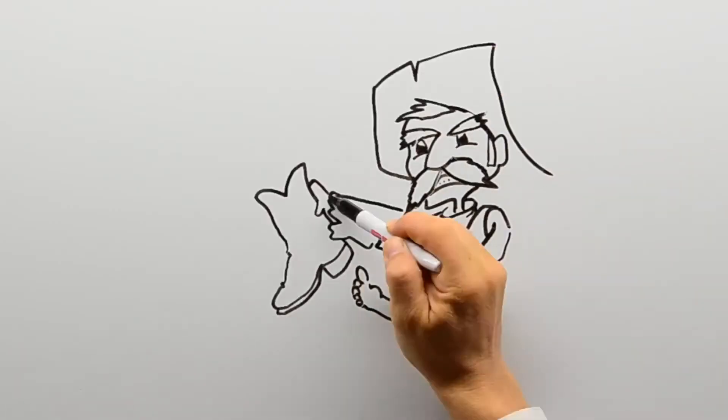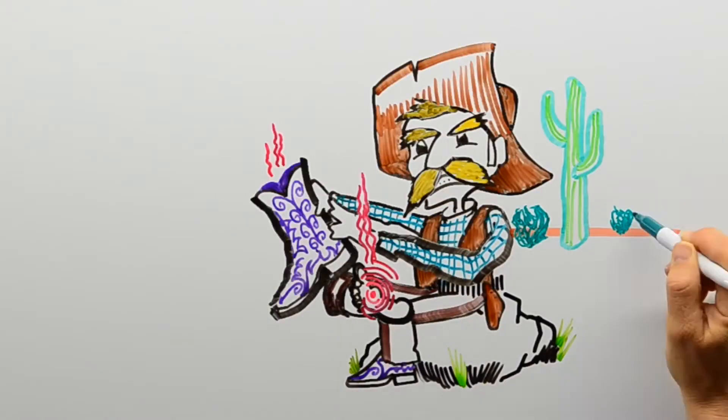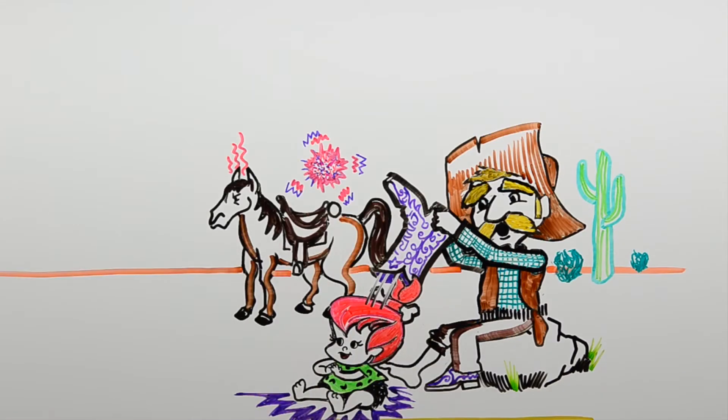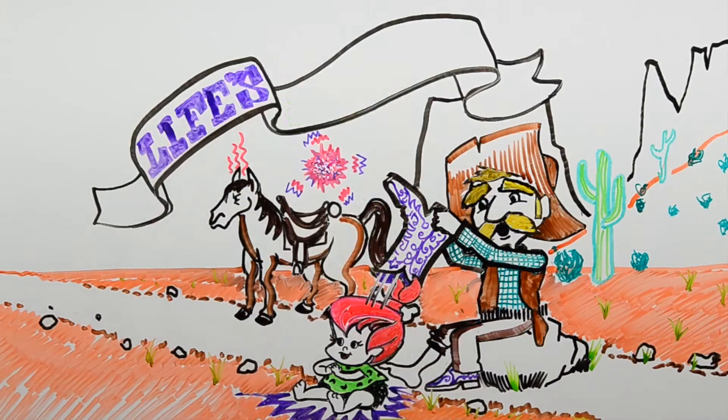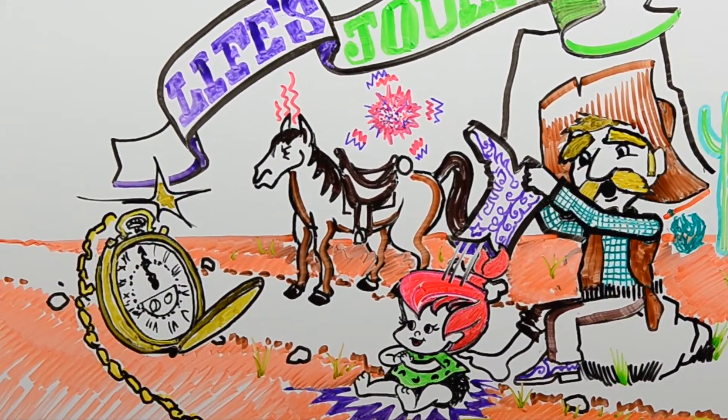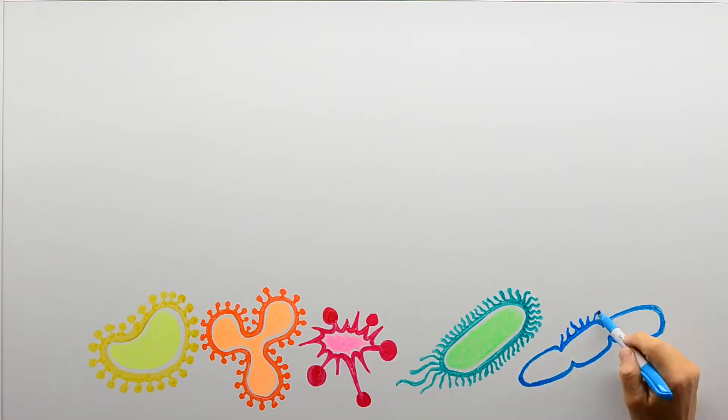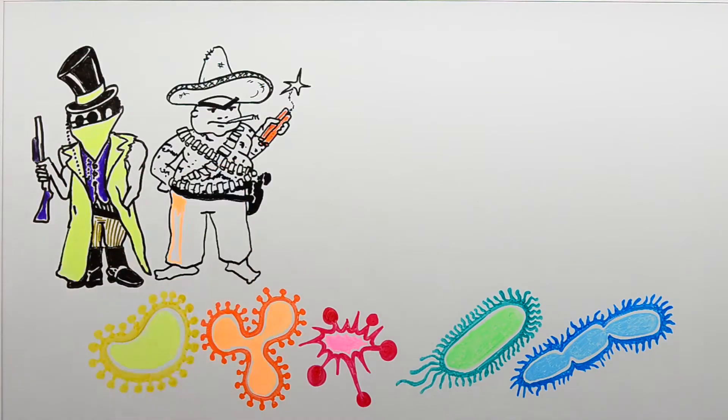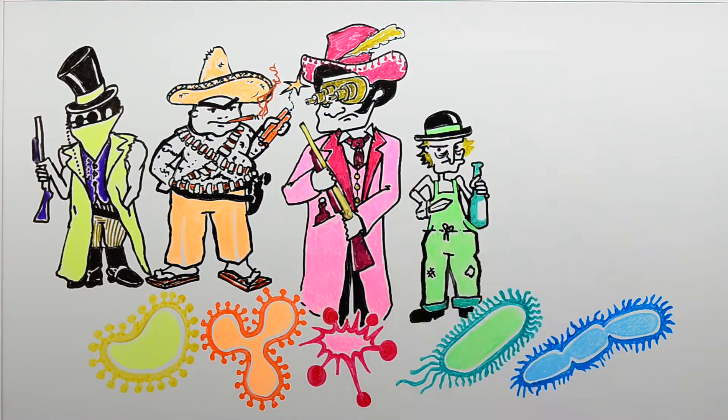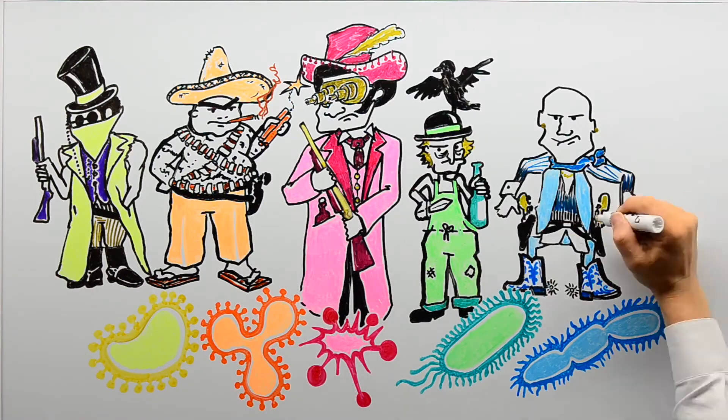First, the bad news. Like a pesky pebble in your boot, or a burr under your saddle, if you're fixing to complete your life's journey, it's often the small stuff you've got to mind over time. Don't underestimate what these little microscopic varmints can do to you. These little baddies have bested tough guys and gals for ages, cut them down before their time.